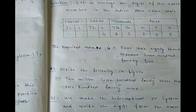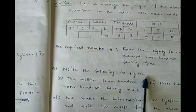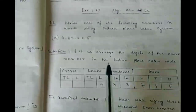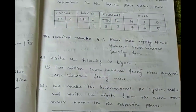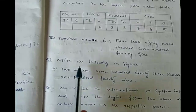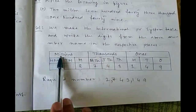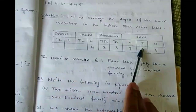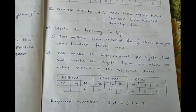Question 3: write the following in figures. Notice that in this question, unlike the previous one, it does not specify which table to use. To figure out the table, look for the word 'million' in the question. Since the million period is only present in the International Place Value System and not in the Indian system, we use the International Place Value System table.